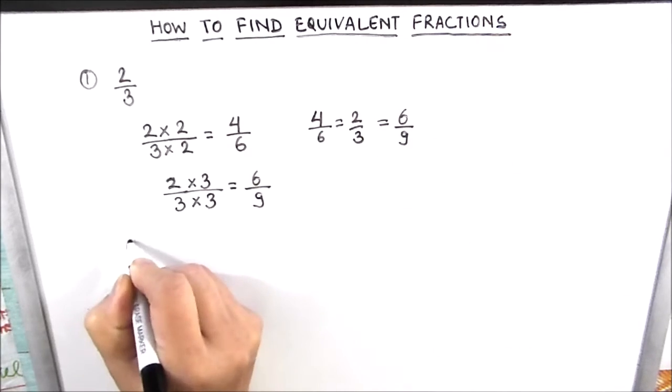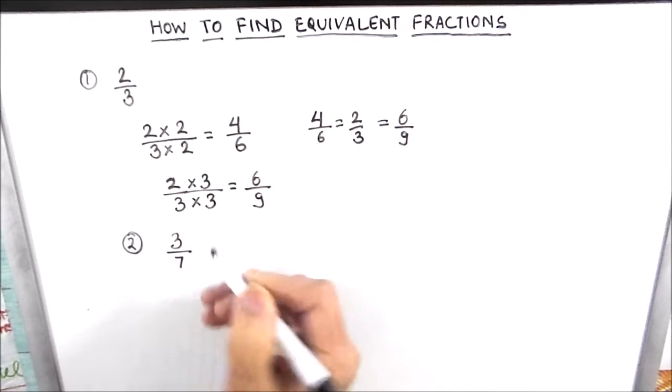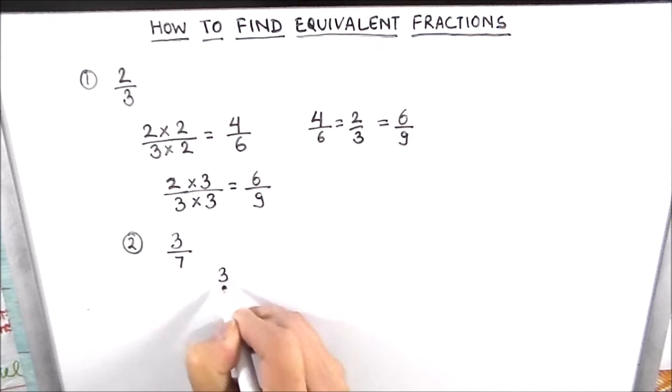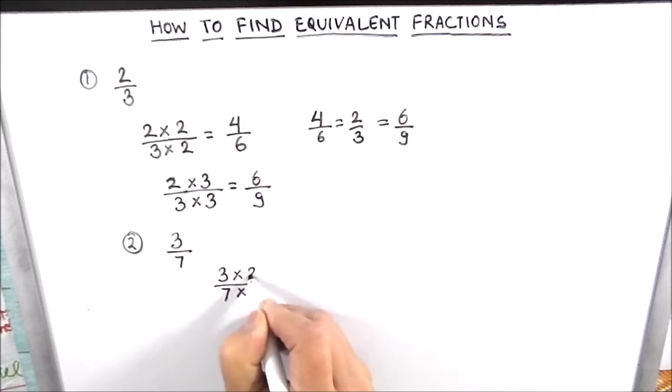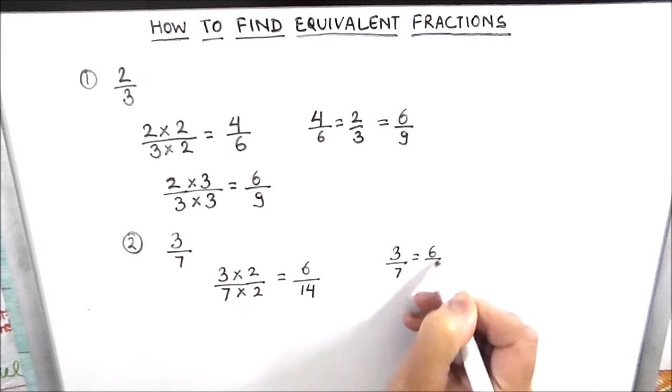Let us solve one more example where we are going to find the equivalent fraction. For finding the equivalent fraction we will multiply and divide it by 2. So 2 times 3 is 6 and 7 times 2 is 14. So 3 by 7 is equivalent to 6 by 14.